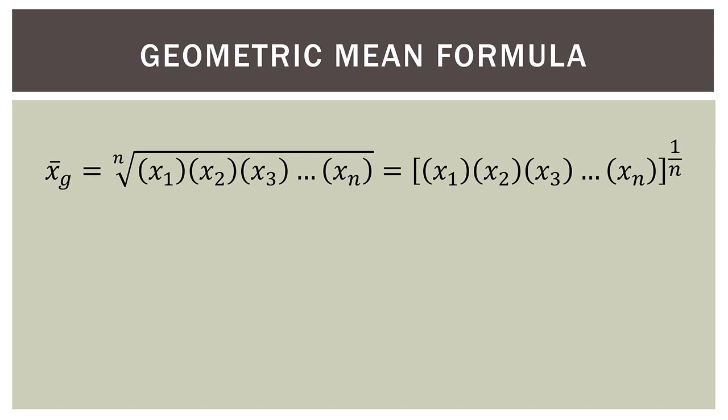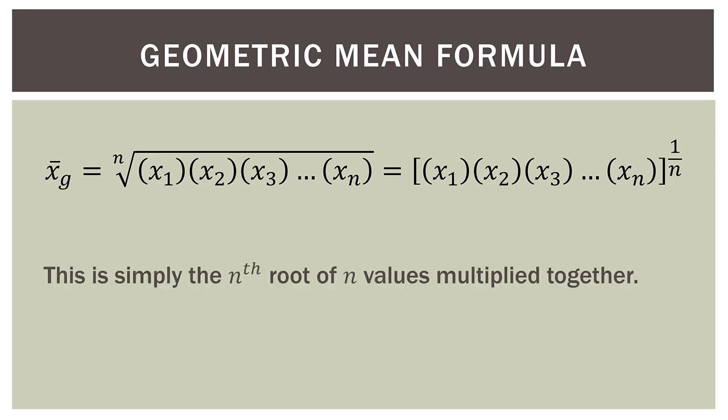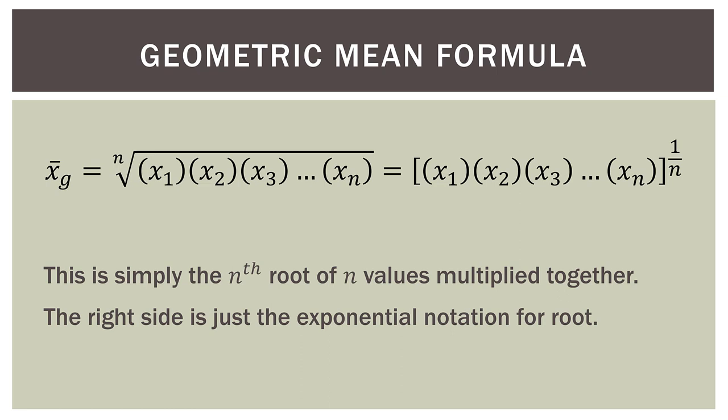Here is the formula for the geometric mean — and it's not anything complicated, because we just did it on the previous slides. The geometric mean, denoted x-bar sub g, is simply the nth root of n values multiplied together — the product of n values. On the right we have exponential notation for roots: for example, the square root can be rewritten as something to the one-half or 0.5 power. So the square root of 16 equals 4, and 16 to the power of 0.5 also equals 4.